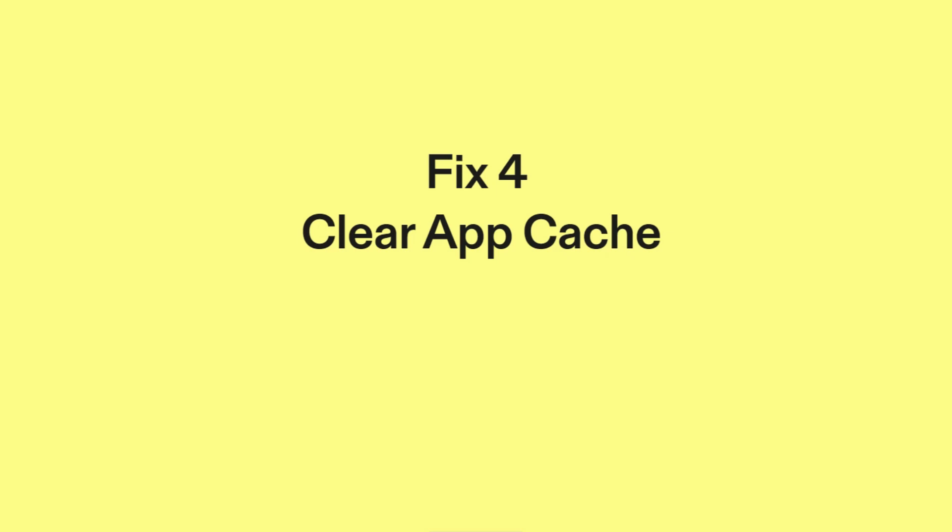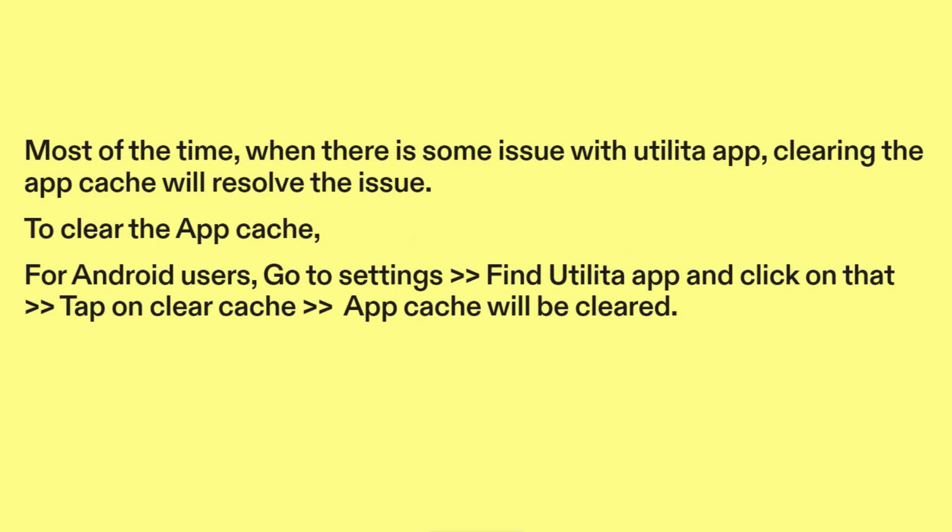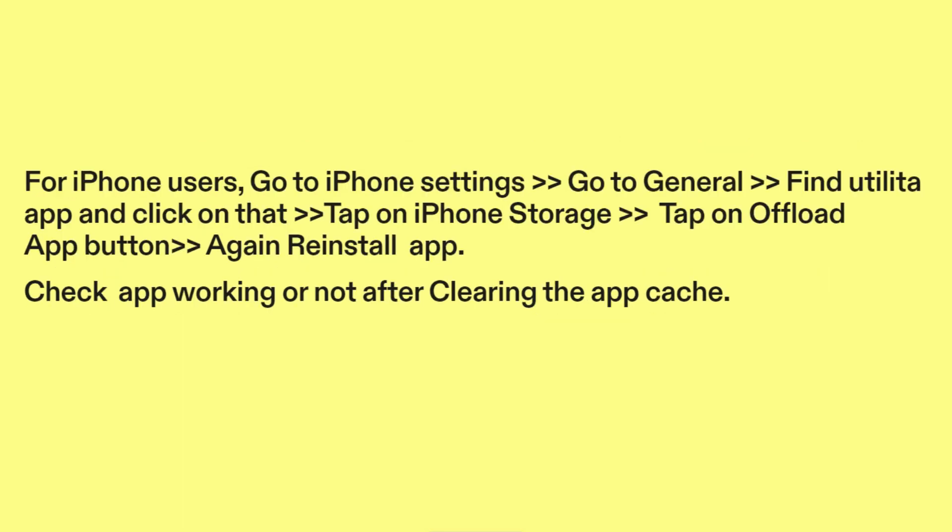Fix four: clear app cache. Most of the time, when there is some issue with the Utilita app, clearing the app cache will resolve the issue. For Android users, go to Settings, find the Utilita app, click on it, and tap on Clear Cache. For iPhone users, go to Settings, go to General, find the Utilita app, tap on iPhone Storage, then tap the Offload App button and reinstall the app. Check if the app is working after clearing the app cache.